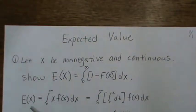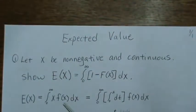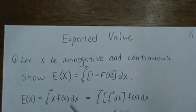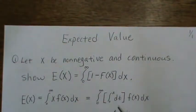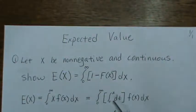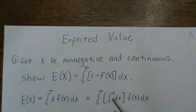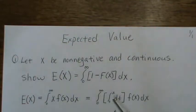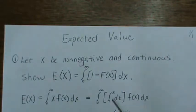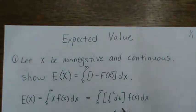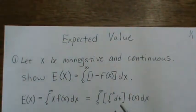The expected value of x by definition is the integral of x f(x) dx. We then rewrite x as the integral from 0 to x of dt — there's an inherent 1 there, and when you take the antiderivative of 1 you get t, and plugging in the values x and 0 leaves just x. So from here to here nothing has changed.